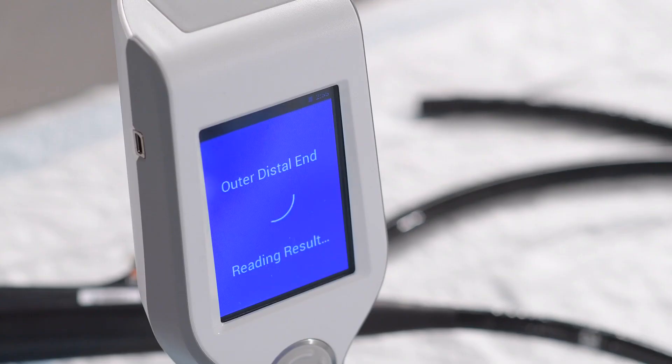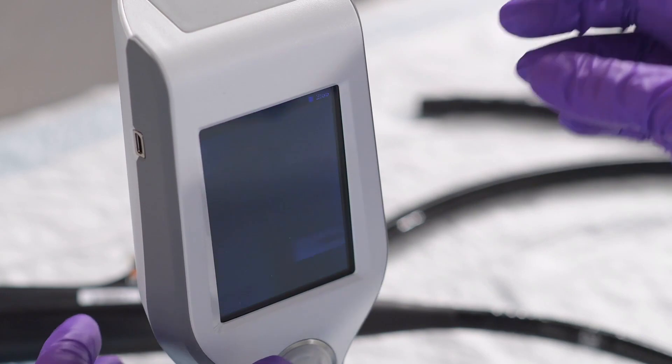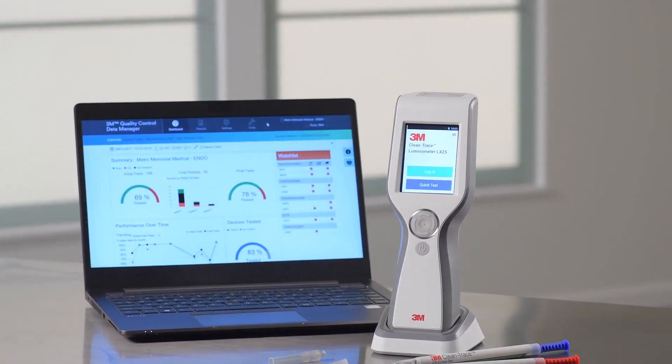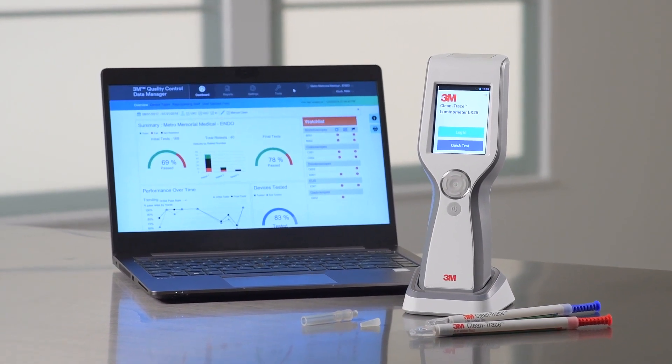In 10 seconds or less, you'll see the result, a quantitative RLU value and a pass or fail response. With the 3M CleanTrace ATP Monitoring System, you get immediate, accurate results.